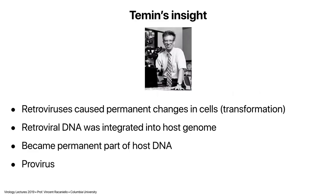For many years, people didn't understand how these viruses caused tumors or made cells grow forever. A key person here was Howard Temin, a professor at the University of Wisconsin-Madison, who recognized that these RNA tumor viruses — now called retroviruses — cause permanent changes in cells called transformation. That had to involve a permanent change to the cell involving DNA, and eventually it was found that retroviral DNA integrated into the host genome. Temin coined a term for this: the provirus — the retroviral DNA integrated into the cell chromosome.